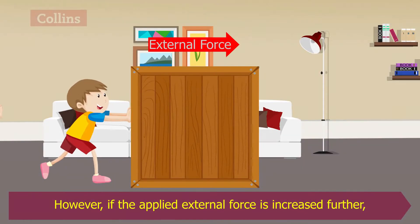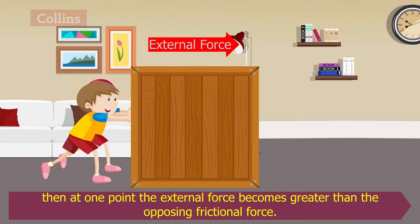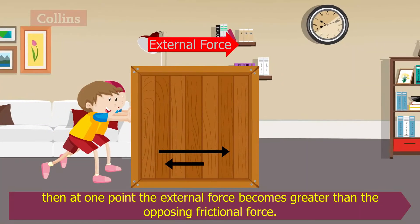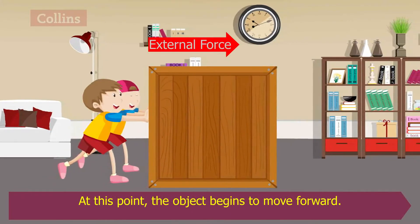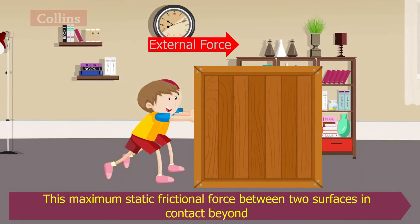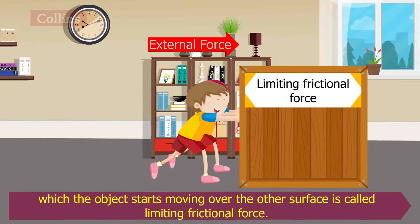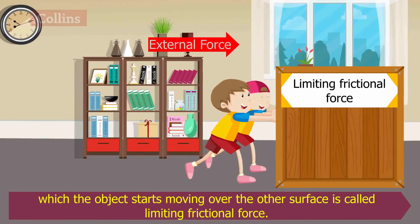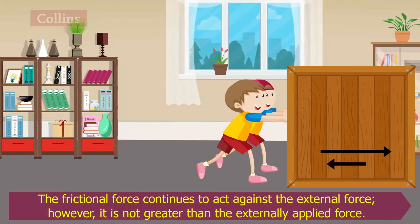However, if the applied external force is increased further, then at one point the external force becomes greater than the opposing frictional force. At this point, the object begins to move forward. This maximum static frictional force between two surfaces in contact, beyond which the object starts moving over the other surface, is called limiting frictional force. The frictional force continues to act against the external force.